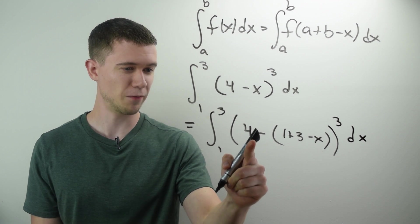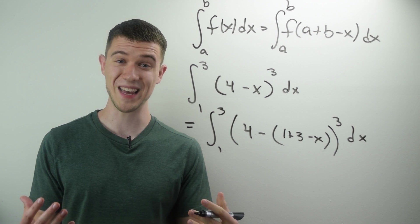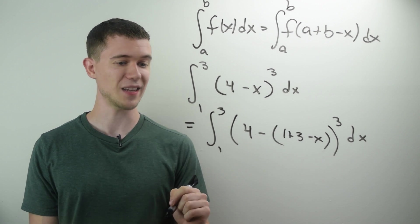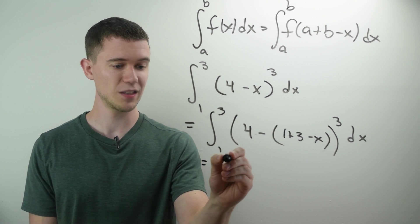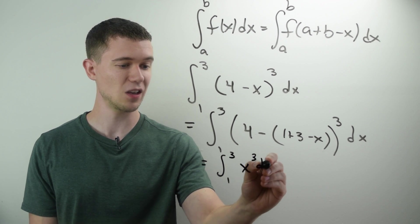Well, you can sort of see what happens here. I've got 4 minus 1 minus 3, or rather 4 minus 4. That would cancel. And then I'd have x minus x is plus x. So this just reduces to the definite integral from 1 to 3 of regular x cubed.